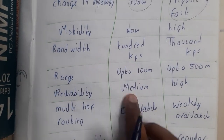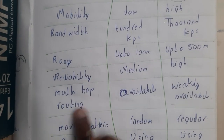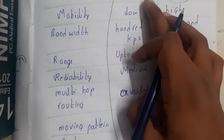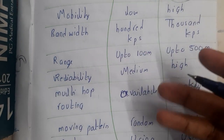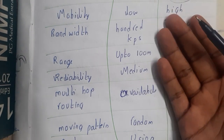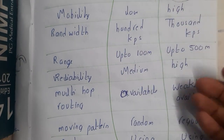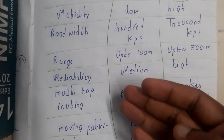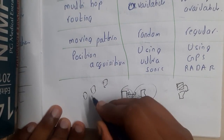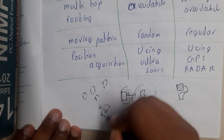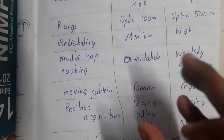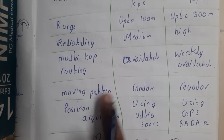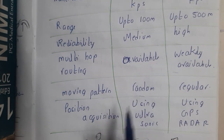Reliability is medium in MANETs and high in VANETs. Multiple hop routing is available in MANETs but only weakly available in VANETs. In MANETs, it is a cellular setup so data transmission across multiple hops is needed when one person sends a message to another. In VANETs, it is vehicular — only nearby vehicles like the front and back vehicle need your info, not a vehicle 500 meters away — that is why multiple hopping is weakly available.